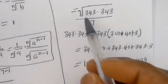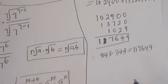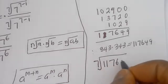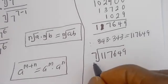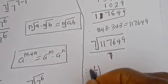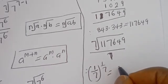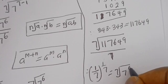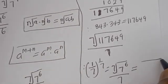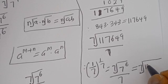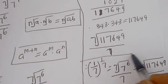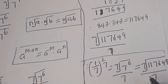Therefore, 1 over 7 to the power of 1 over 7 is equal to the 7th root of 7 to the power of 6 over 7, which is equal to the 7th root of 117,649 over 7. And this is the final answer: 343. I hope you enjoyed the video, thank you for watching, please don't forget to like, share, comment and subscribe to my channel.